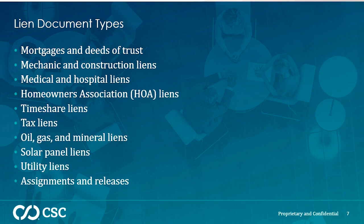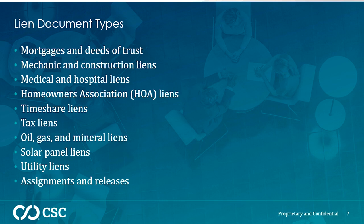This goes to show how broad the application of eRecording technology is — it covers multiple industries, not just real estate. For example, in Texas and Oklahoma, the oil industry and the solar industry. On the coasts, predominantly timeshare liens in states like Florida. During the COVID pandemic era, various government agencies suspended collection efforts across many of these industries. Since those regulations have been lifted, we're seeing a significant uptick in a variety of liens being recorded.